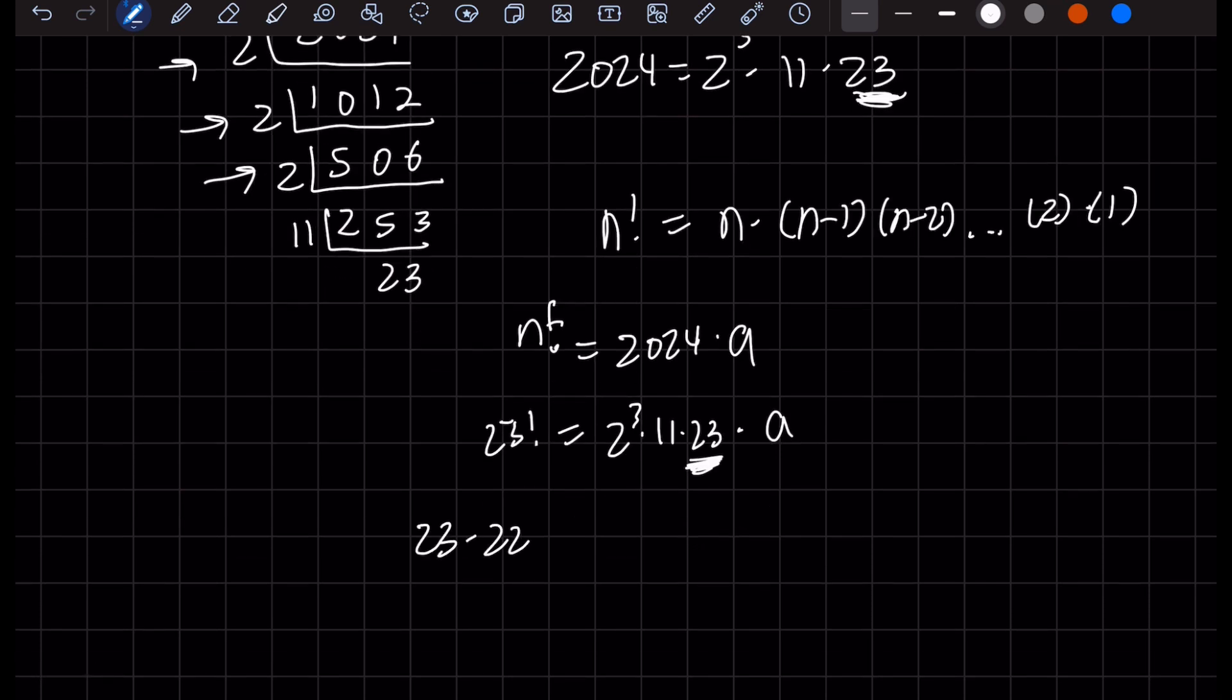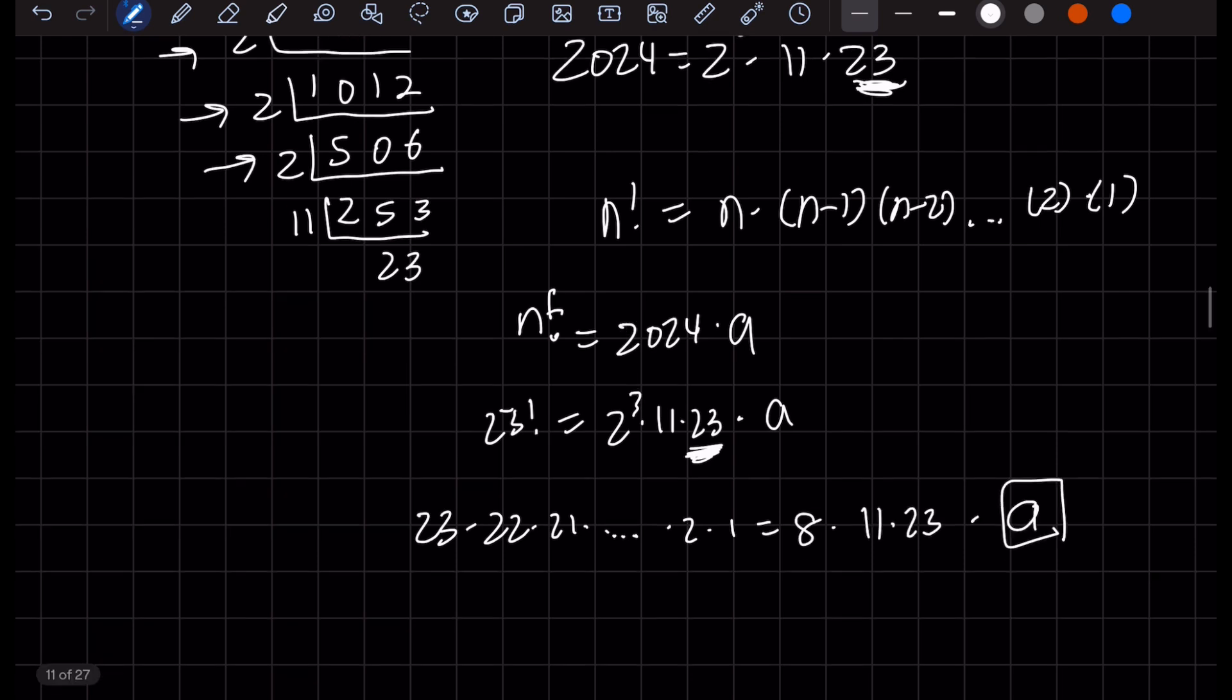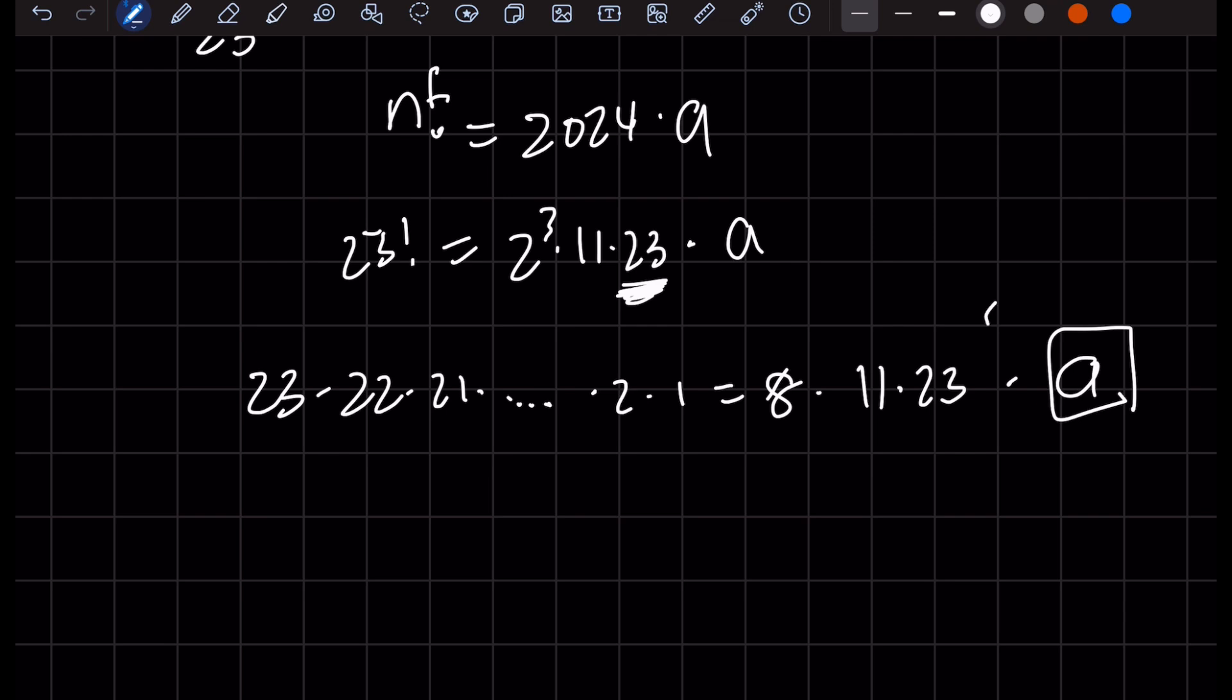It's 23 factorial: 23 times 22 times 21 times dot dot dot times 2 times 1. This does encompass 8, 11, 23. And this number a here would just be essentially 23 factorial divided by 8 times 11 times 23.